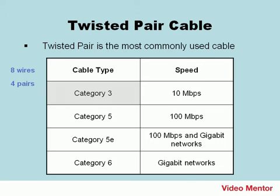First is Category 3, and this is rated to a maximum of 10 megabits per second, which is good enough for regular Ethernet, but it's really not suitable for today's applications. It's considered a deprecated version of cable, but you will still see this in some companies, and most likely will be doing some upgrades in the future. Next is Category 5, which addresses the speed limitations of Category 3, and this can achieve 100 megabits per second, which is suitable for fast Ethernet networks, which you will see in the field.